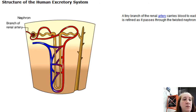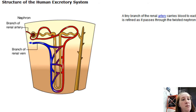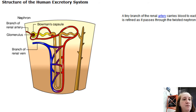A tiny branch of the renal artery carries blood to each nephron. Blood pressure forces fluid through the walls of a cluster of capillaries called the glomerulus, and it collects in the cup-shaped Bowman's capsule — this is called filtration. The filtrate is refined as it passes through the nephron tubule: useful substances are returned to the blood, and the remainder collects as urine, which is carried by the collecting duct into the renal pelvis for excretion.